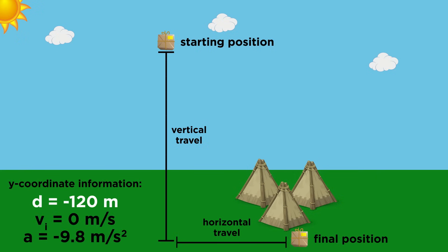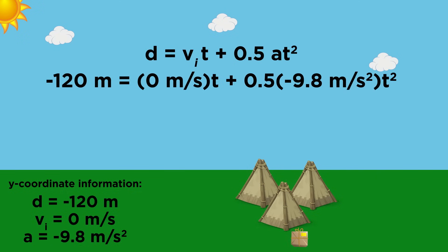We know that the position will be negative 120 meters, since it will travel that far in the negative direction. Initial velocity in the y direction is 0, since the helicopter has no vertical motion, and acceleration is known. Let's plug these into this equation and solve for T, which will be about 4.95 seconds.